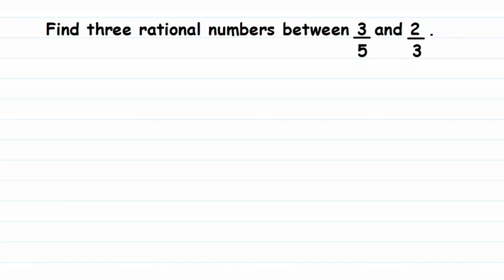Here is one more question — and these kinds of questions are usually asked in exams. The question is: find three rational numbers between 3/5 and 2/3. This kind of question is usually asked and the method remains the same. There are different methods to find rational numbers between two rational numbers, but here I'm going to show you the simplest one. Let's start.